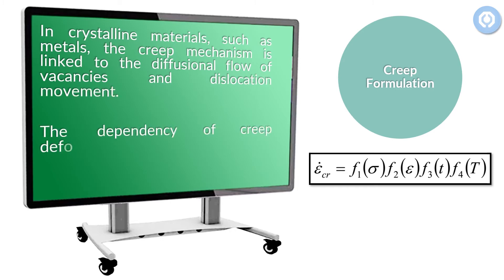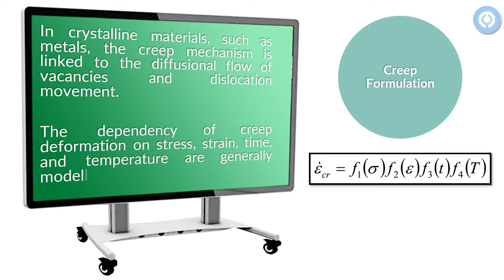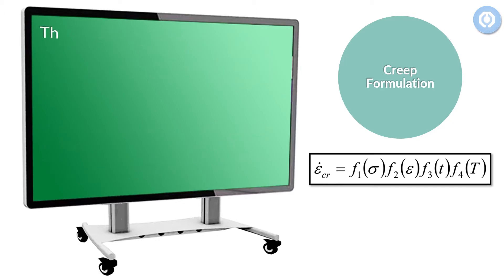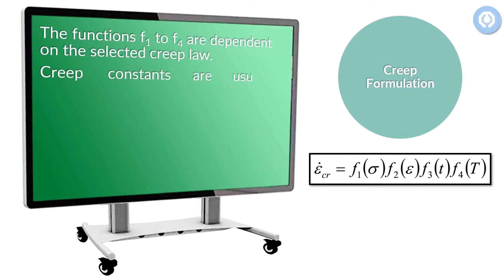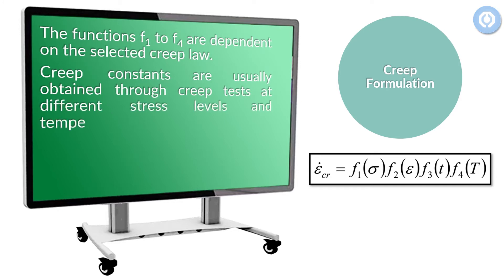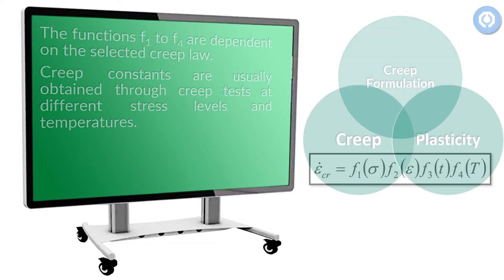The dependency of creep deformation on stress, strain, time, and temperature are generally modeled as the shown formula. The functions F1 to F4 are dependent on the selected creep law. Creep constants are usually obtained through creep tests at different stress levels and temperatures.